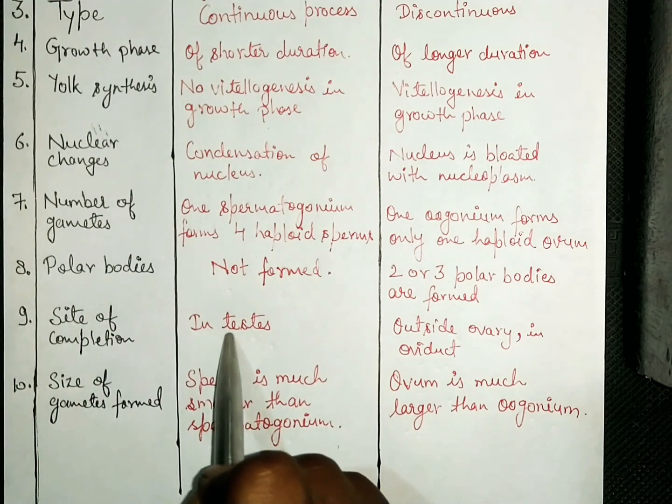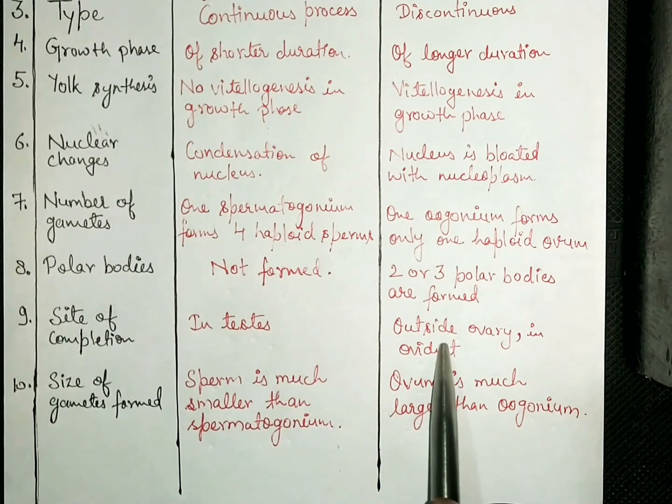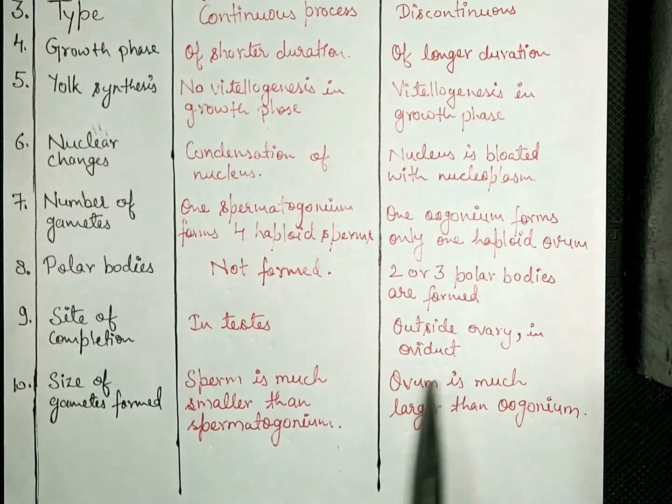Spermatogenesis gets completed in testes and oogenesis gets completed in oviduct.